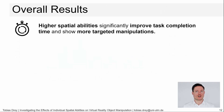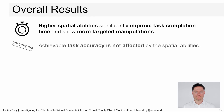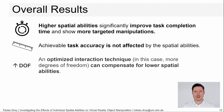Summing up our results in an overall manner — please read the paper for all the details — they show that, as assumed, higher spatial abilities significantly improve task completion time and result in more targeted manipulations. We found no effect on task accuracy; achievable task accuracy is not affected by spatial abilities. Very important is also our interpretation that an optimized interaction technique can compensate for lower spatial abilities. We saw this in the results of the handlebar, which in our study resulted in the best performance independent of spatial abilities.